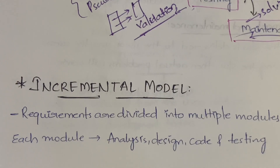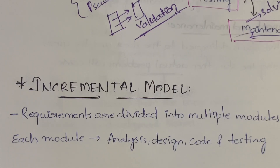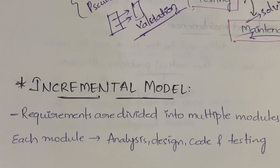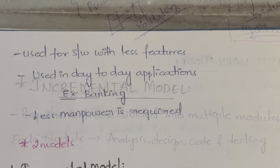Normally we do analysis, design, coding, and testing all at once, but here we do it per module. For example, under the electricity module, the electrician's job is to provide correct current supply. He first asks how many sockets you want per room, what kind of sockets and switches you want — 20 amps, 16 amps — and based on that he does the analysis. So everybody performs their own separate actions. The incremental model is used for software with fewer features, such as day-to-day banking applications, and it requires less manpower since the work is divided.